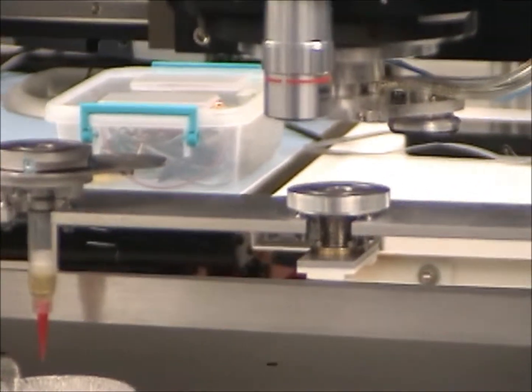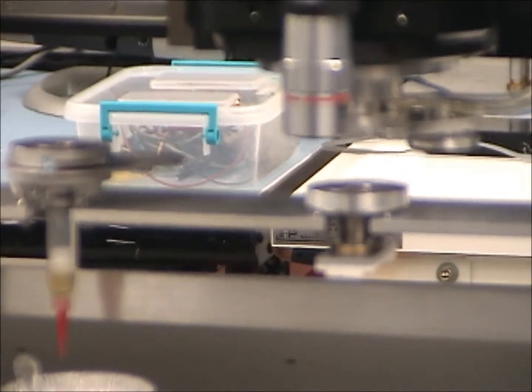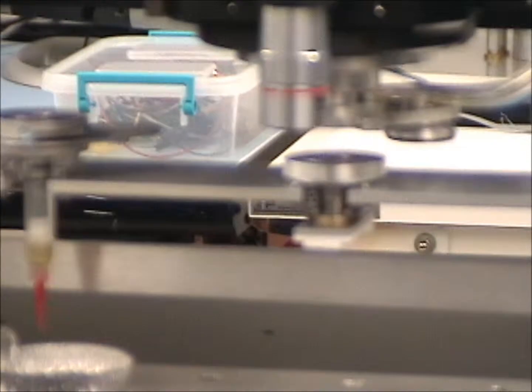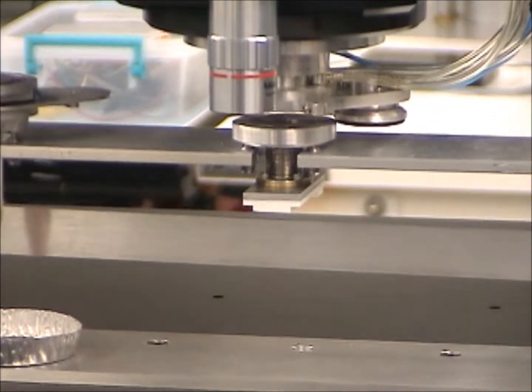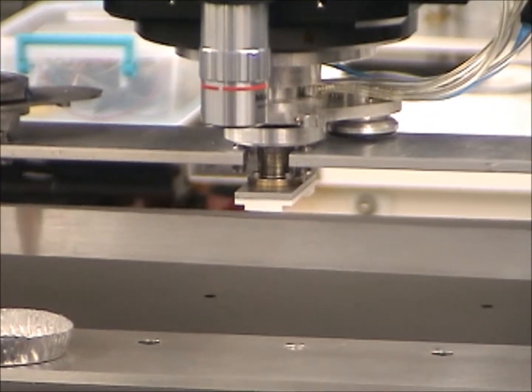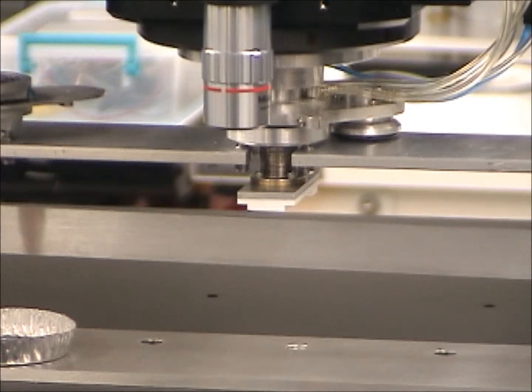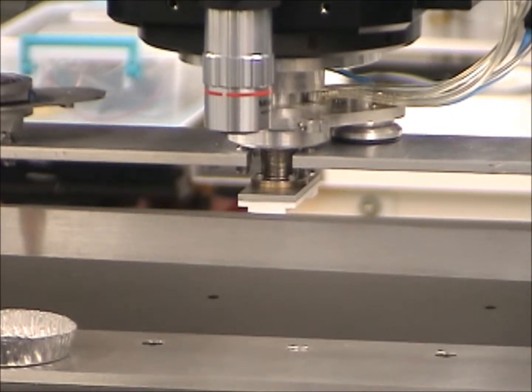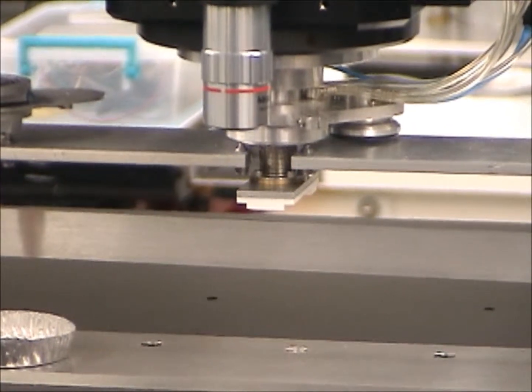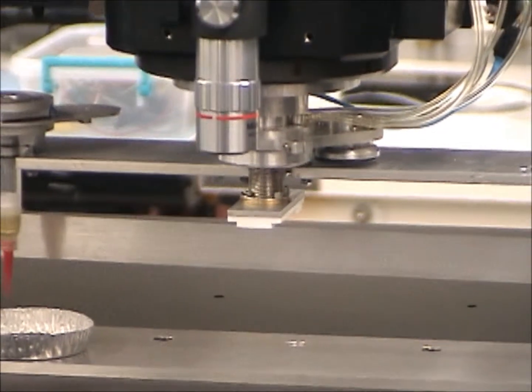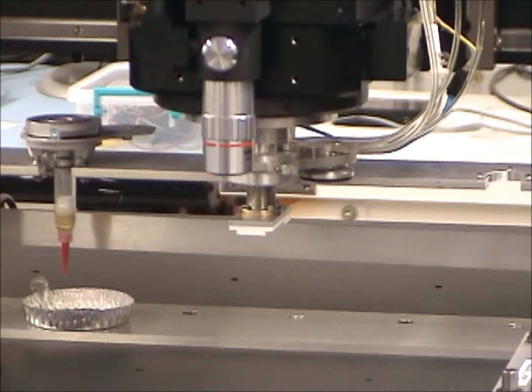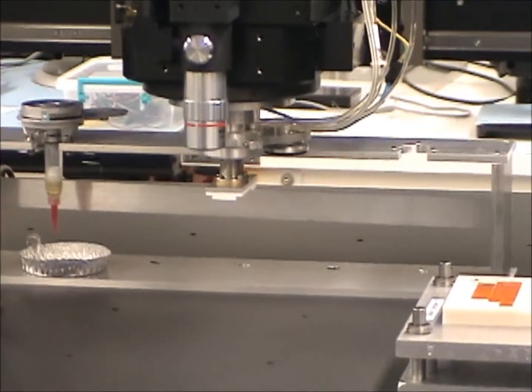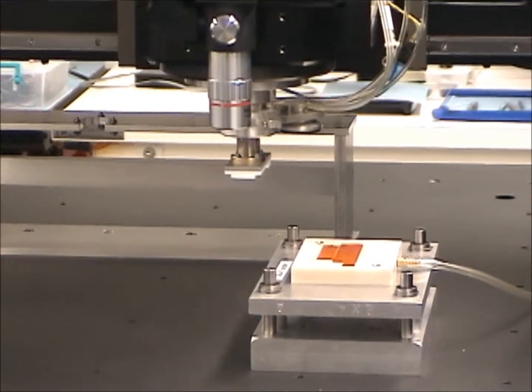The vacuum clamps to the vacuum pickup tool, takes it out of the tool rack, translates to the location of the HDI.